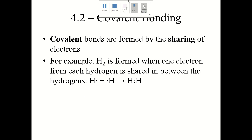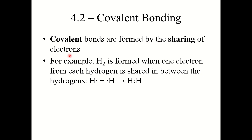We're going to combine Section 4.1 and Section 4.2 together since 4.1 is so short. Moving into Section 4.2: covalent bonding. Covalent bonds are formed by the sharing of electrons. For example, H2 is the chemical formula of the hydrogen gas molecule. H2 is formed when one electron from each hydrogen is shared between these hydrogen atoms — each hydrogen atom brings one electron to the table, and they share those two electrons in what's called a covalent bond.